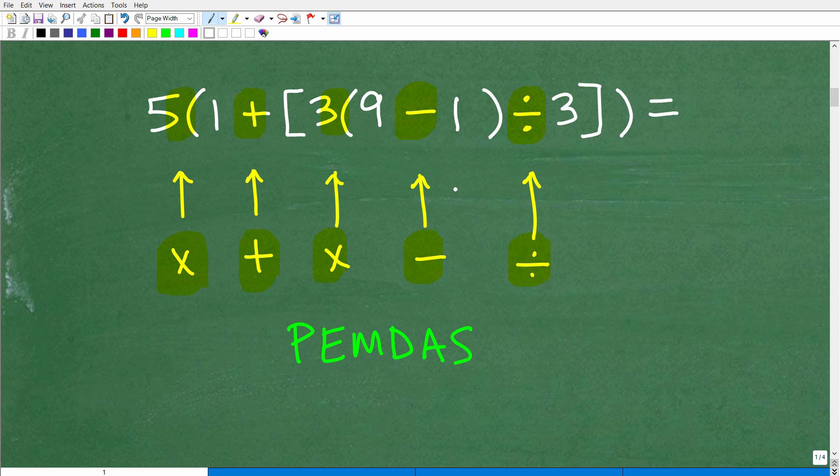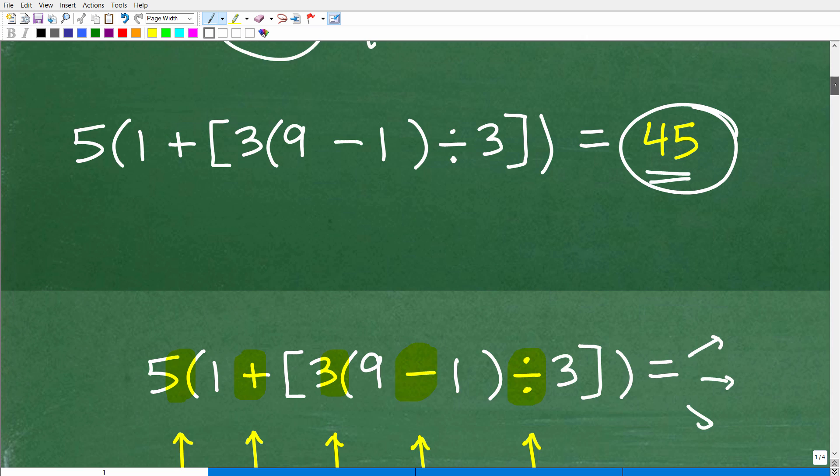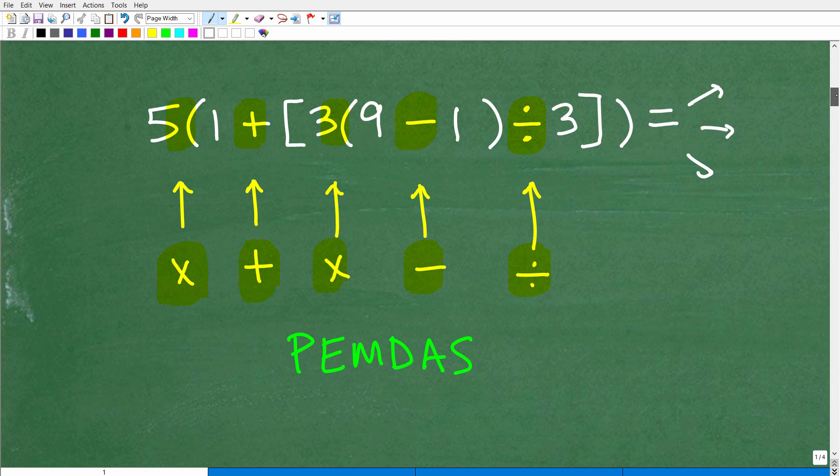So I have to deal with all these various math operations. These are called mathematical operators, multiplication, addition, subtraction, and division. So here's the thing. Depending on the order, in terms of how I do this problem, what order I do it, I can come up with all sorts of various numbers as my final answer.